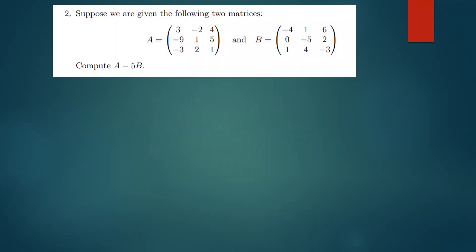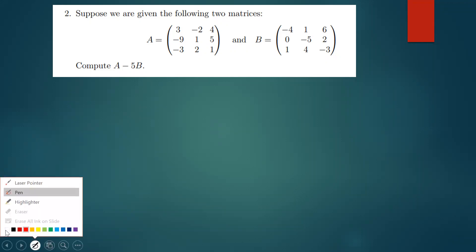This is the first question. It says: suppose you are given the following matrices, compute A minus 5B. Addition and subtraction of matrices is actually the simplest operation under the topic of matrices. This is a simple question — let me do it quickly.